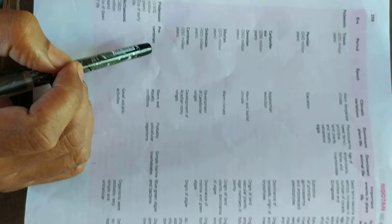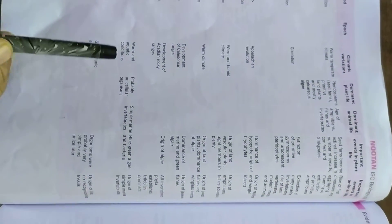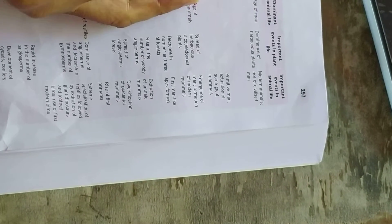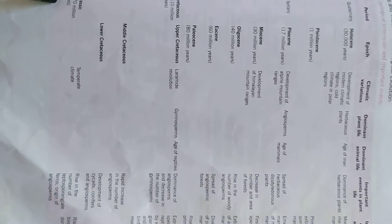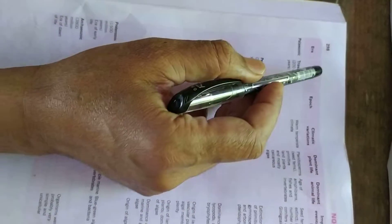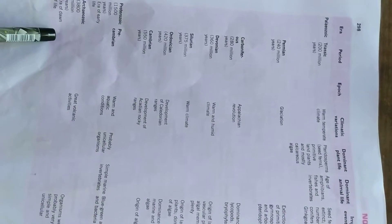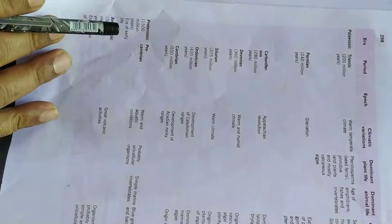Each period listed on the geological time scale on pages 297 and 298 gives you an idea of the age of the fossils.